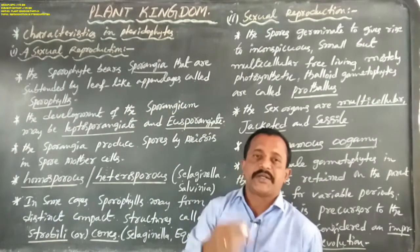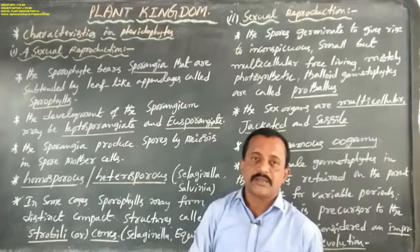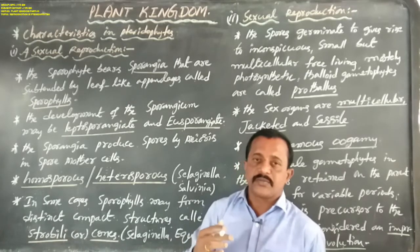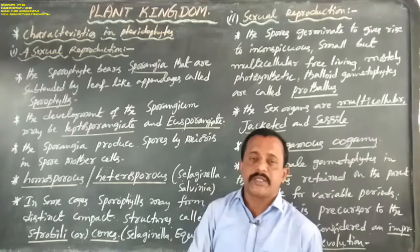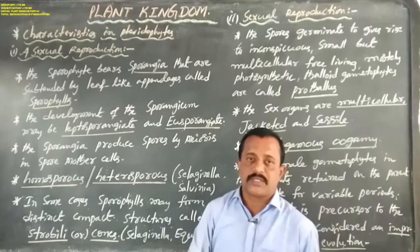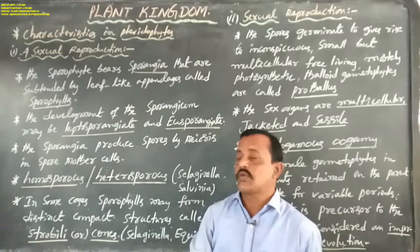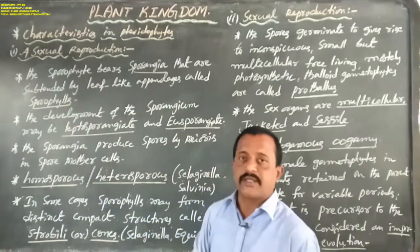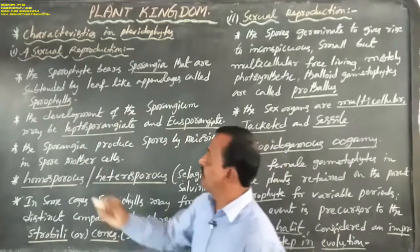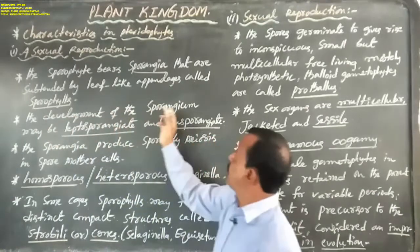Sporophylls are asexual organs. Some leaves produce asexual spores — those leaves are called sporophylls. Another definition: leaves that bear spores are subtended by leaf-like appendages, that is called sporophylls.